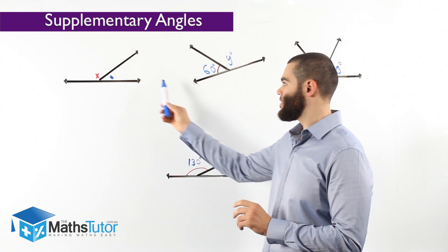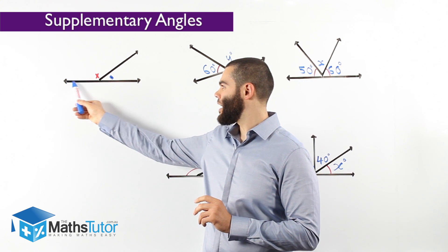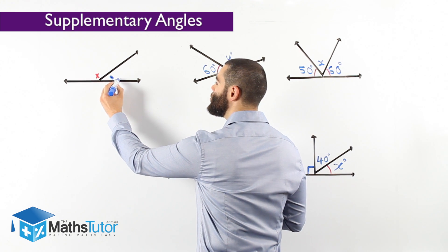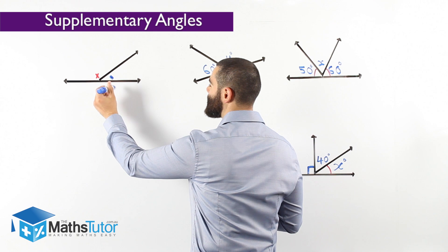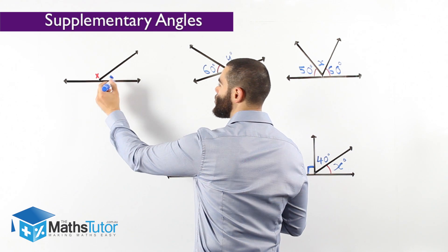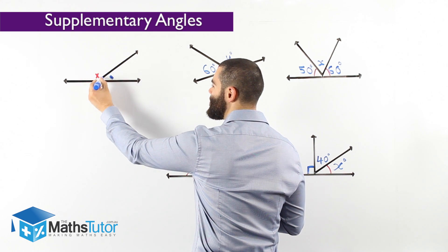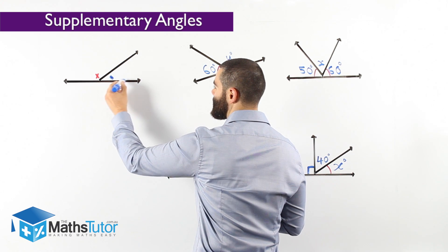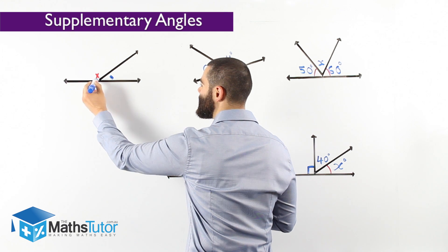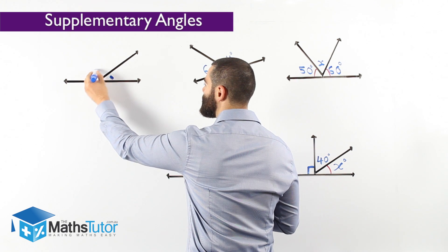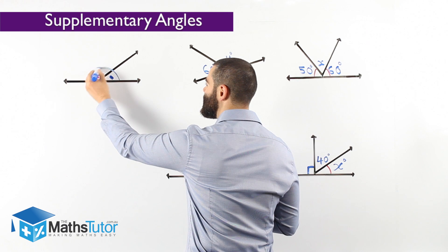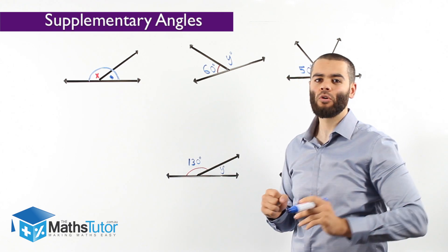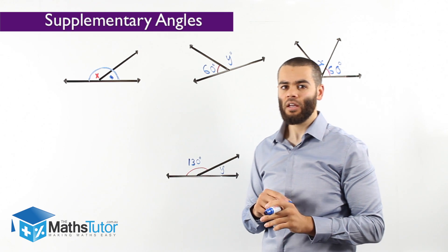In theory, we have a straight angle made up of 180 degrees, and it's split into two or maybe even more angles. In this case, split into two angles that share a common arm and a vertex. This angle marked in blue and this angle marked in red — they both add up to 180 degrees. They make a straight line, which is what we call adjacent supplementary angles.